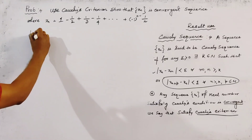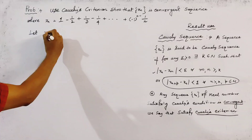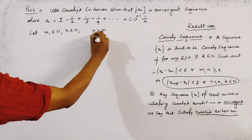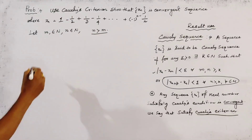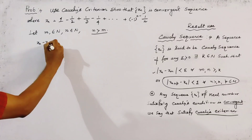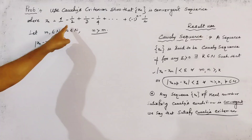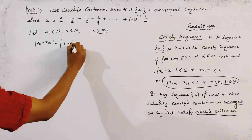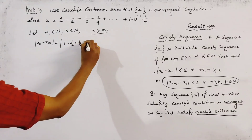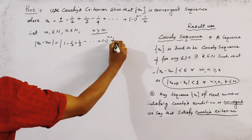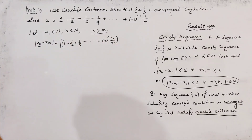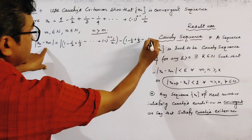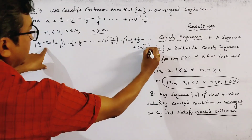Now we go to the main problem. Let m and n be natural numbers such that n is greater than m. We write xn minus xm, substituting the value of xn as 1 - 1/2 + 1/3 - ... + (-1)^(n-1) * (1/n), and similarly xm as 1 - 1/2 + 1/3 - ... + (-1)^(m-1) * (1/m).